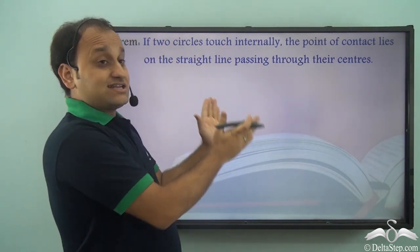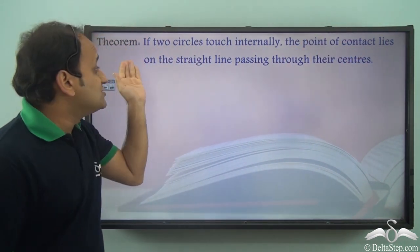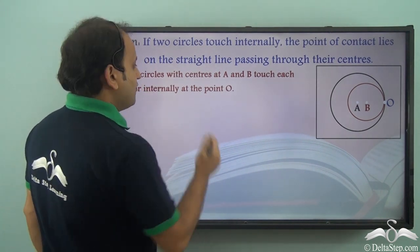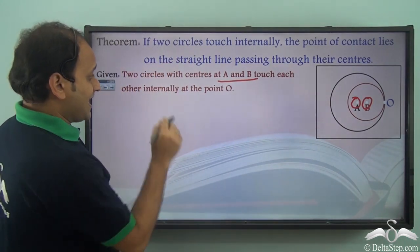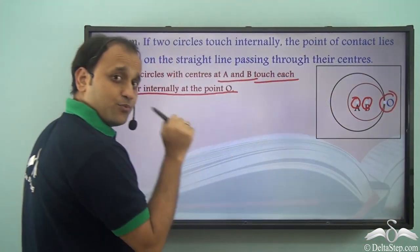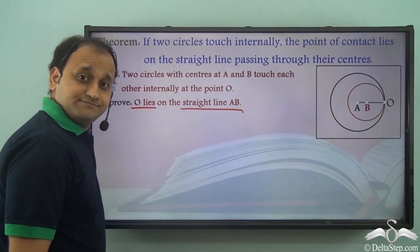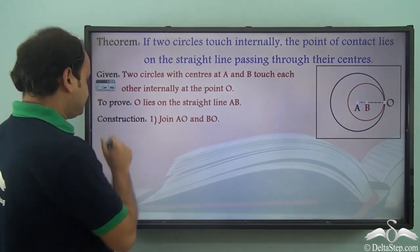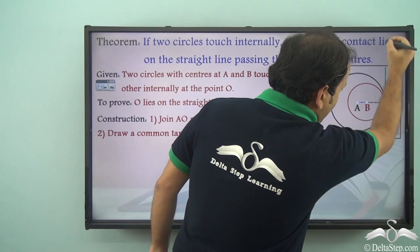Now, what if the circles touch internally? The theorem states: if two circles touch internally, the point of contact lies on the straight line passing through their centers. Given: two circles with centers A and B touch each other internally at point O. We need to prove that O lies on straight line AB. Construction: join AO and BO, then draw common tangent PQ at point O.